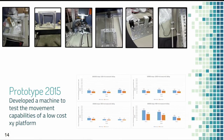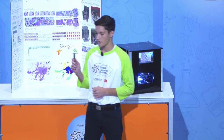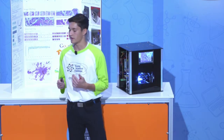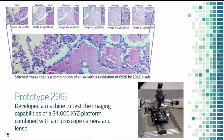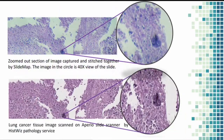In 2015, I tested 101 step motors and I was able to achieve cellular level movement very easily. In 2016, I wanted to test the imaging capabilities of microscope cameras on a low-cost XYZ platform, and I was able to achieve comparable results with a $250,000 slide scanner, with the images from my machine being on top.